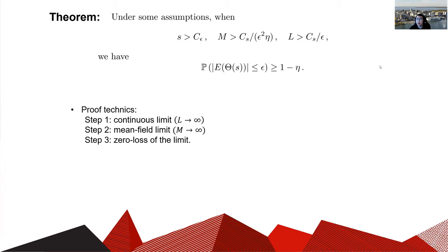Our proof contains several key steps. First, we let l go to infinity and consider the continuous limit of ResNet. Next, we let m go to infinity and consider the mean field limit of ResNet. In both cases, we can give an explicit convergence rate in terms of l and m. Finally, we study the limiting gradient flow and prove it will give zero loss under some assumptions.